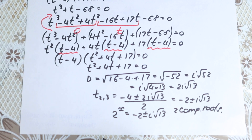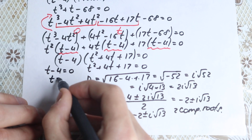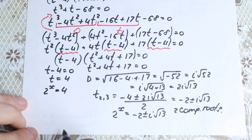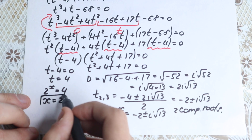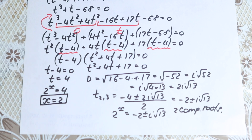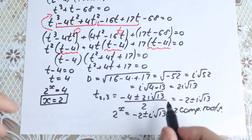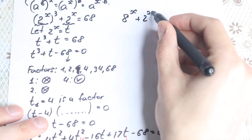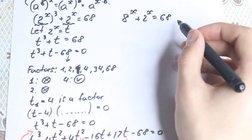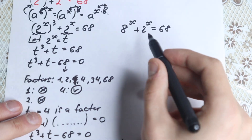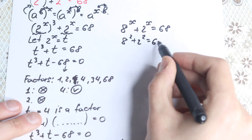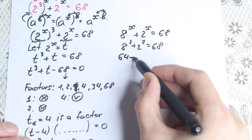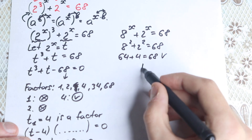Let's find the real number root. From t minus 4 = 0, we get t = 4. Going back to our substitution, 2^x = t gives us 2^x = 4, and therefore x = 2. Let's verify: 8 squared plus 2 squared equals 64 plus 4, which equals 68. Correct!